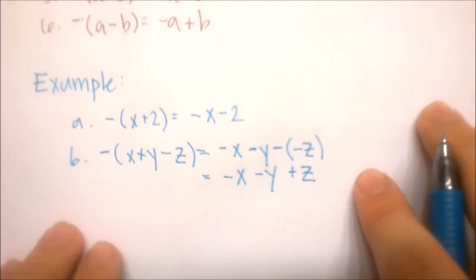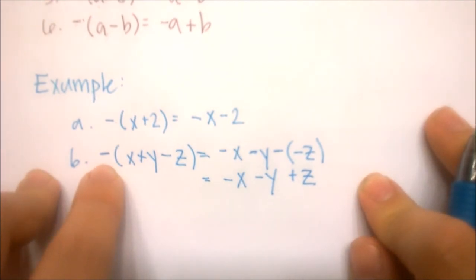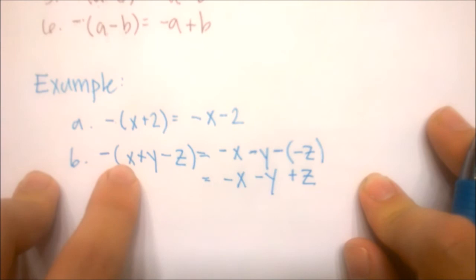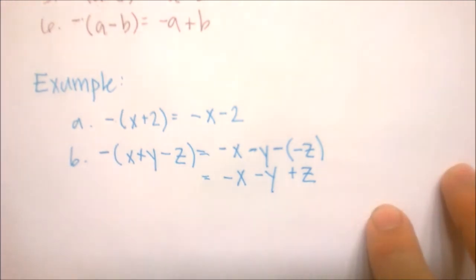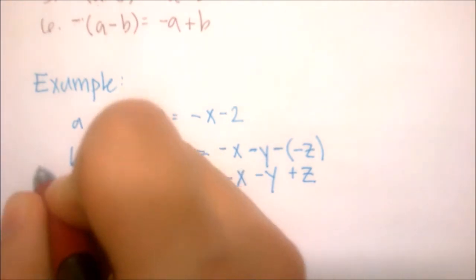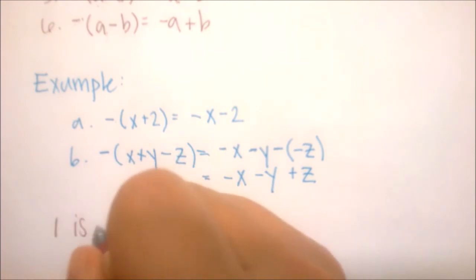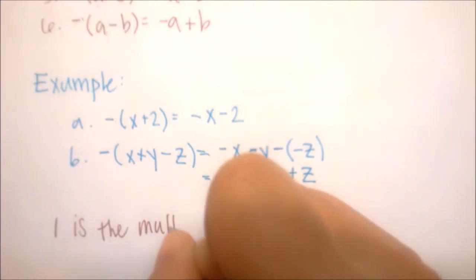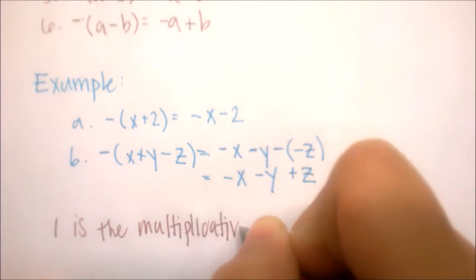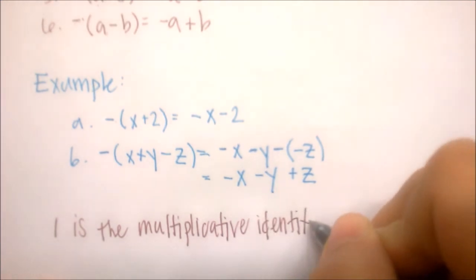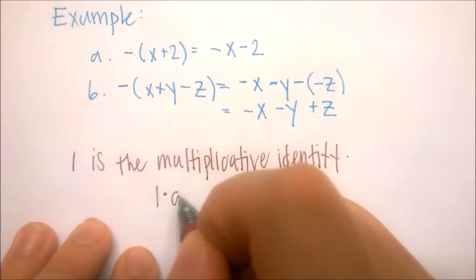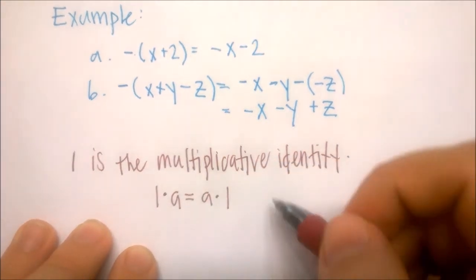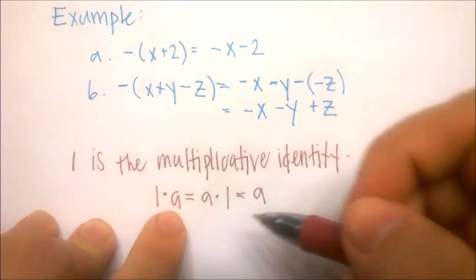A negative number can be thought of as multiplying by negative 1, because 1 has no effect on multiplication — that's a very special property called the multiplicative identity. Since 1 is the multiplicative identity, you can multiply 1 by any real number and it won't change that number's value. So 1 times a equals a times 1, which just equals a.